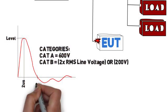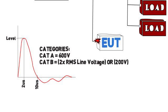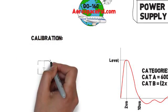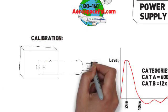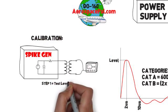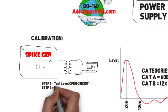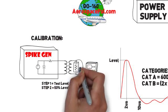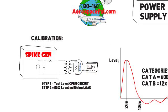The calibration for this test is pretty simple. Use the voltage spike generator to achieve the category level by injecting on open circuit. Then inject on a 50 ohm dummy load to achieve 50% of the category level. This ensures the generator has a source impedance of around 50 ohms.